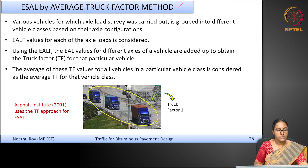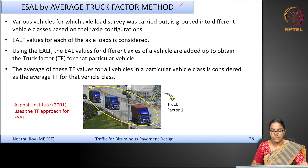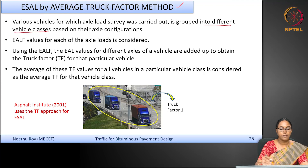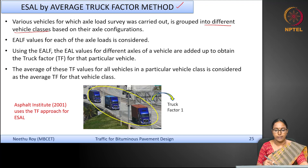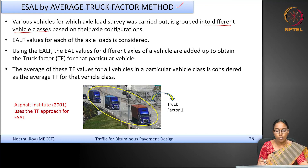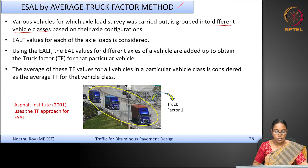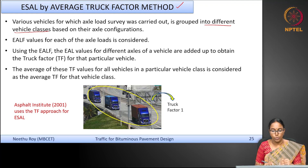In this case, the various vehicles for which the axle load survey is carried out will first be grouped into different vehicle classes. For example, you can have trucks with a single axle and a tandem axle, trucks with a single axle and a tridem axle. For each vehicle group, you can then divide them into different axle loads based on the axle load spectra of that vehicle group alone.